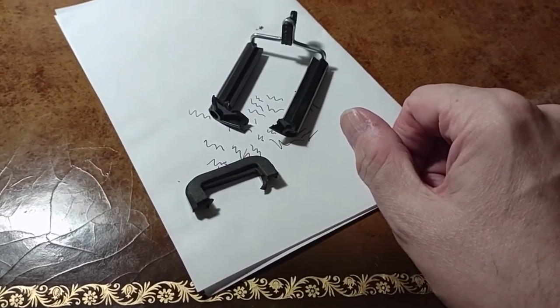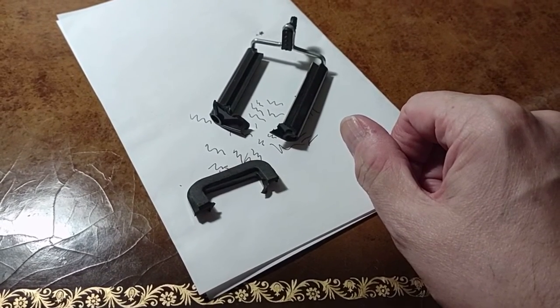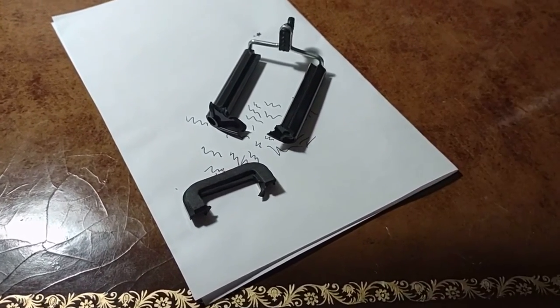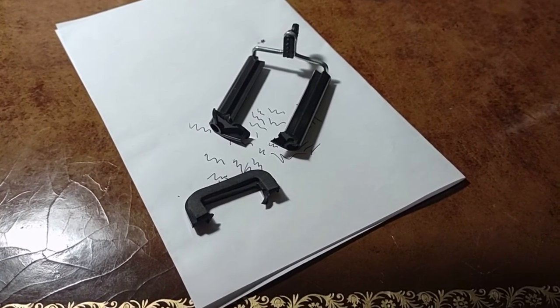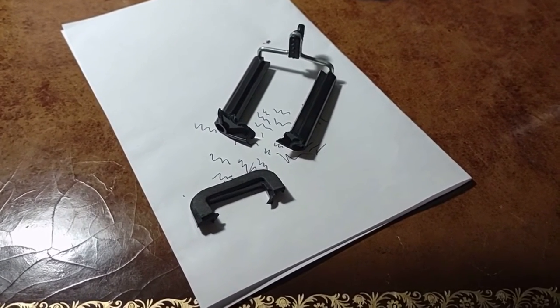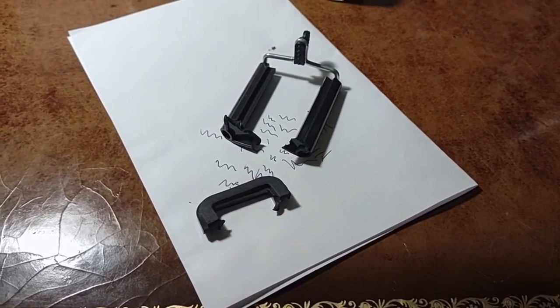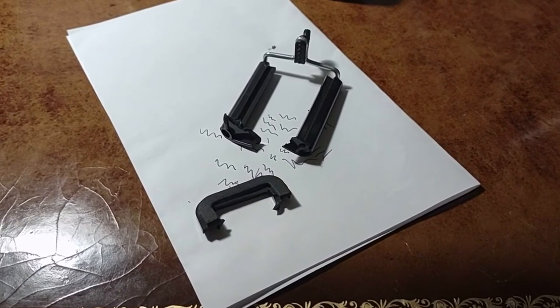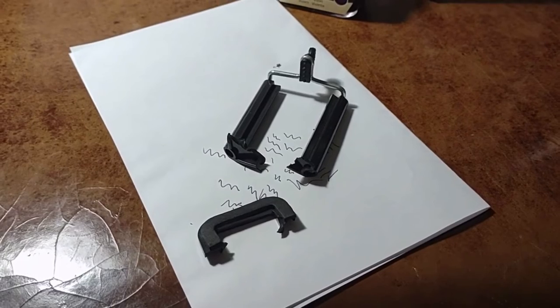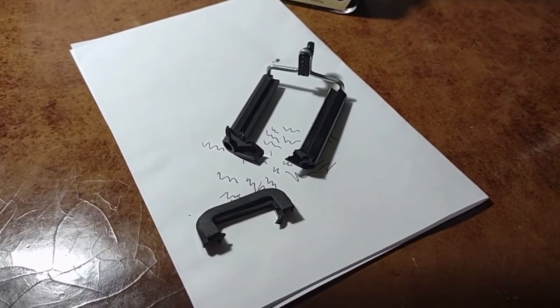So anyway, the Moto G Stylus phone and smartphone camera is very nice, but it's so damn wide and large and difficult to manipulate one-handed. So it's a trade-off.